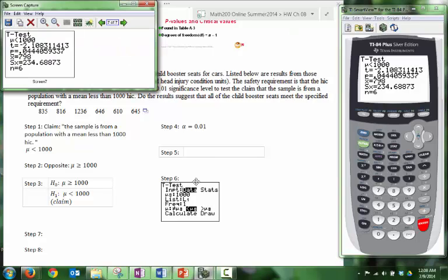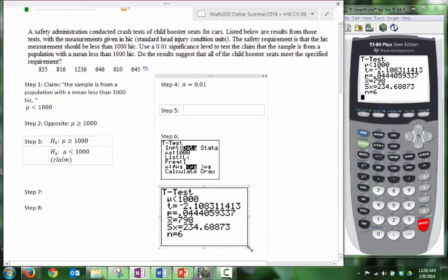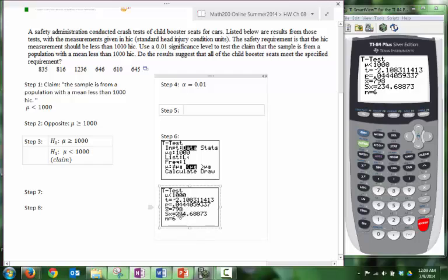Some interesting bonuses that we get from this calculation is that we actually get the mean and the standard deviation and our n. The t-test found that for us if we stored it in one of our lists. We also have our test statistic, so let's make a note of that. Remember that this is a t-test statistic. So t is equal to negative 2.108. Let's call it 2.11.